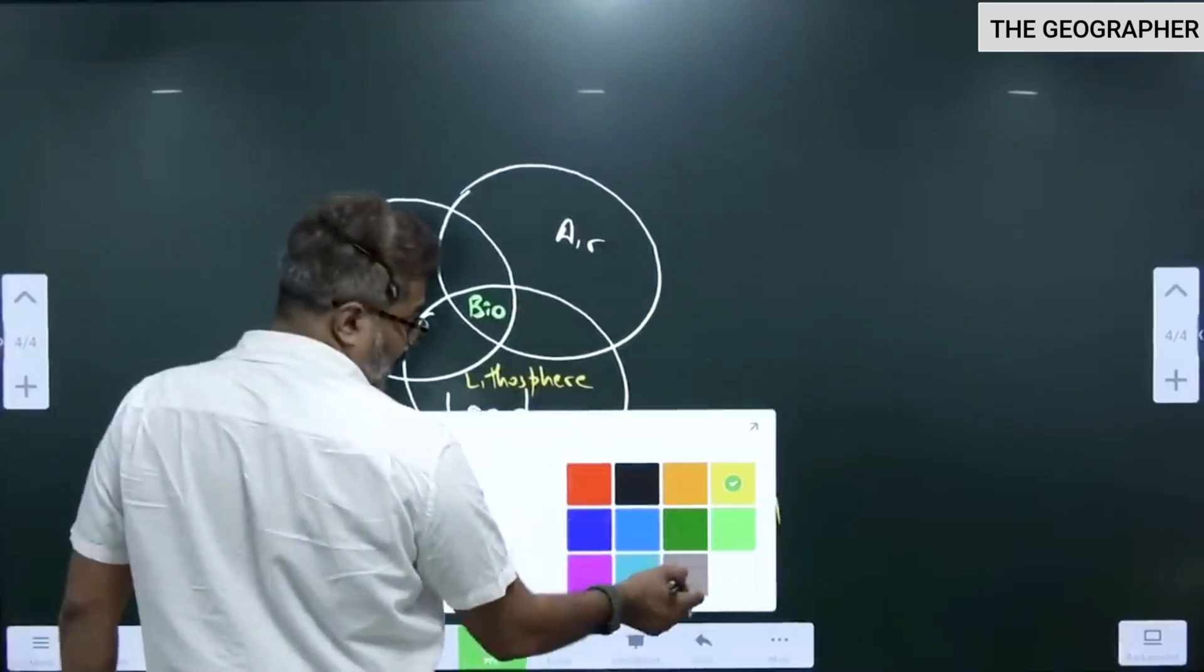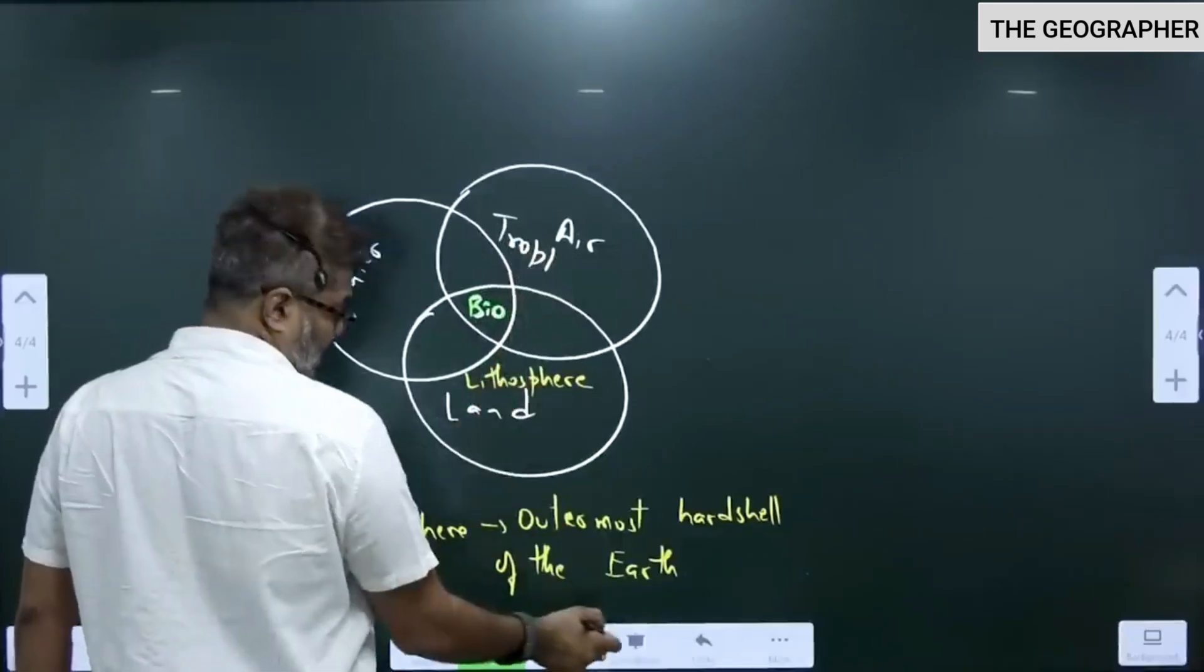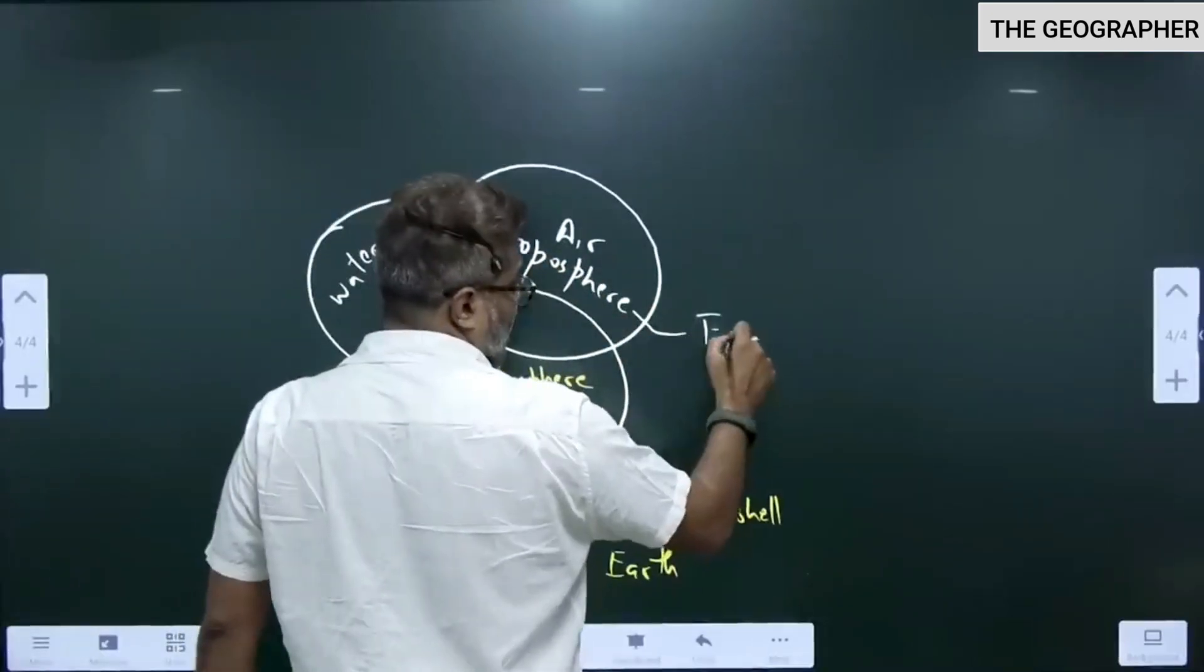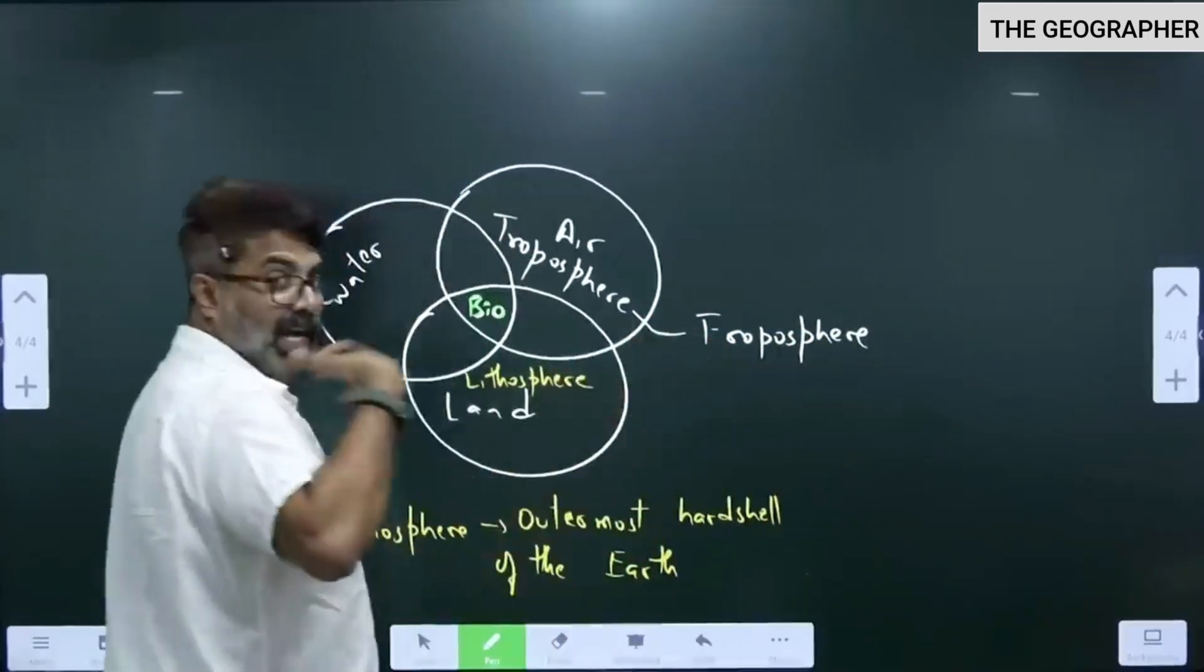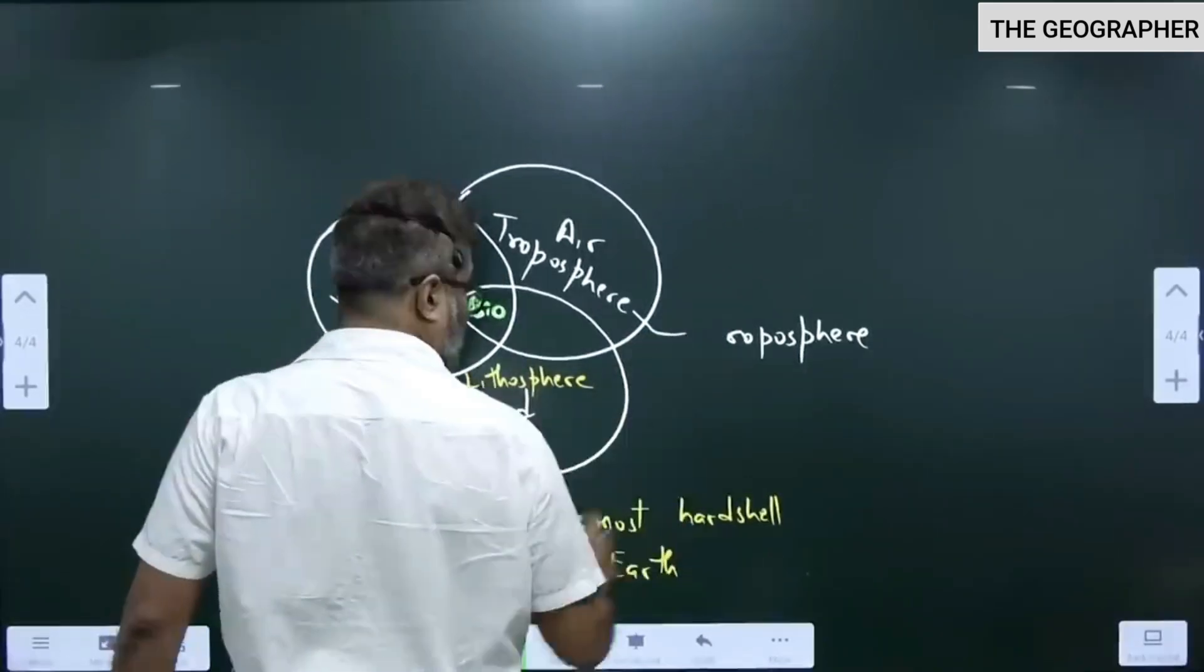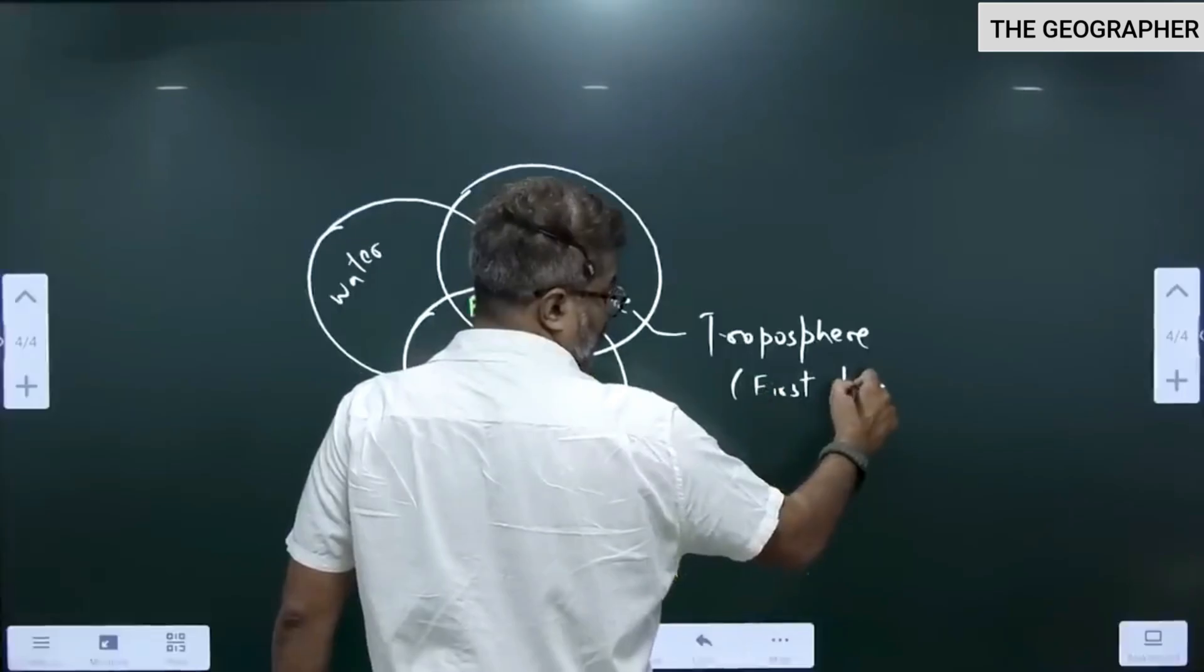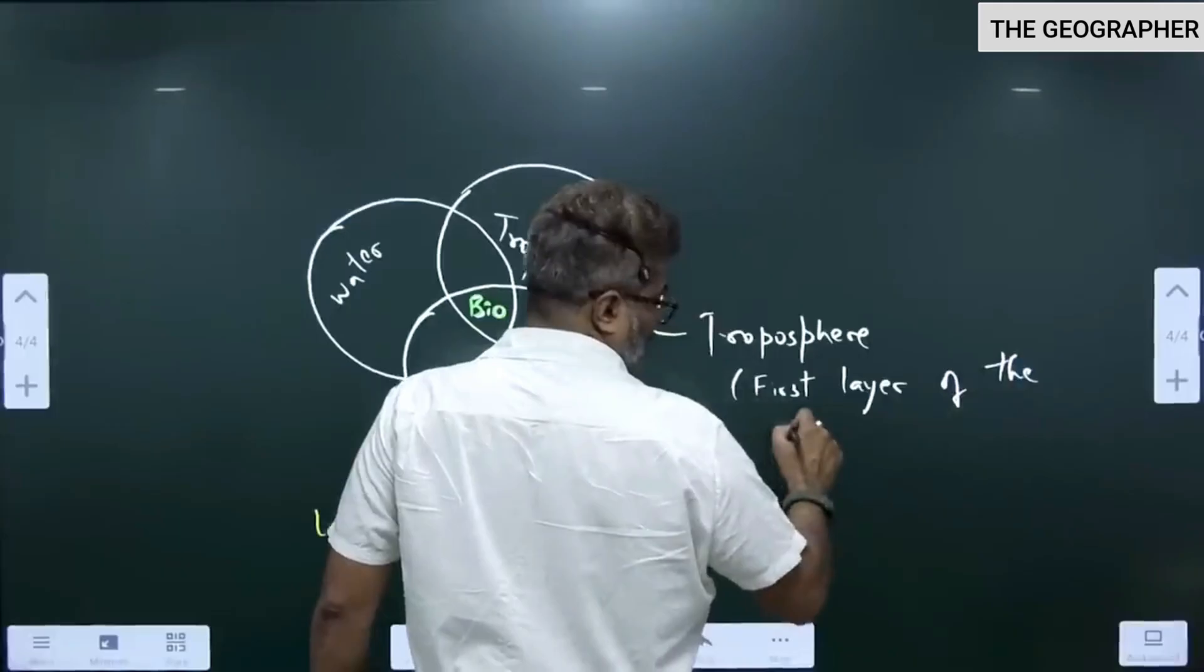In atmosphere we study a topic called troposphere. The first layer of the atmosphere is called troposphere. Please write - troposphere is the first layer of the atmosphere.